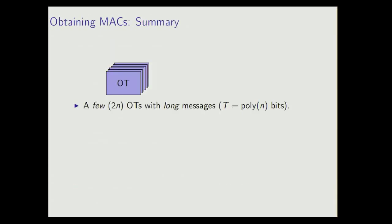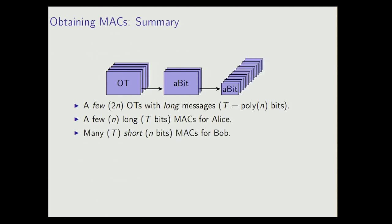Just to give a quick summary of what happened here, we took a few OTs with long messages, so 2N OTs with messages of length t. Then we implemented N long MACs for Alice, so MACs of length t, N of those. And then those we turned into many short MACs for Bob, so t MACs of length N. And what you should notice here is that while these are short, they're still the length of the security parameter, so they should still be hard to guess.